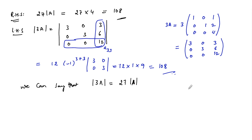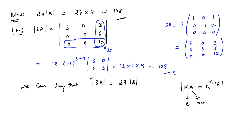We can also remember this as a general property: det(kA) = k^n × det(A), where k is a scalar and A is a matrix of order n×n. Here, since A is 3×3, det(3A) = 3^3 × det(A) = 27 × det(A), which confirms our result.